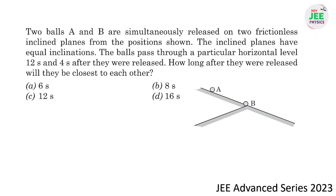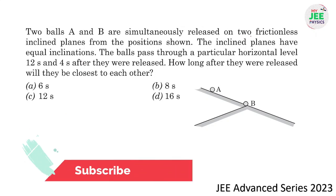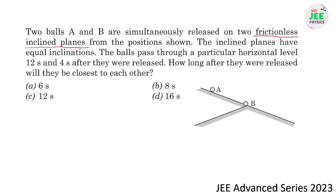The question: two balls A and B are simultaneously released from two frictionless inclined planes. The important statement here is 'frictionless inclined planes' — because if you place any object on a smooth inclined plane, it slides down with acceleration g sinθ. So A will accelerate downward with g sinθ, and B also.